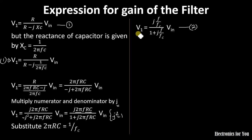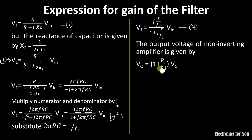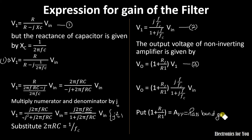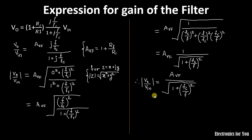We now have the value of V1, and the output voltage V0 for the non-inverting amplifier is given by V0 = (1 + RF/R1) × V1 — let this be equation 3. Substituting V1 from equation 2 into equation 3, we get the output voltage. Letting AVF = 1 + RF/R1 as the pass-band gain, the gain V0/Vin simplifies to: V0/Vin = AVF × (jF/FC) / (1 + jF/FC).